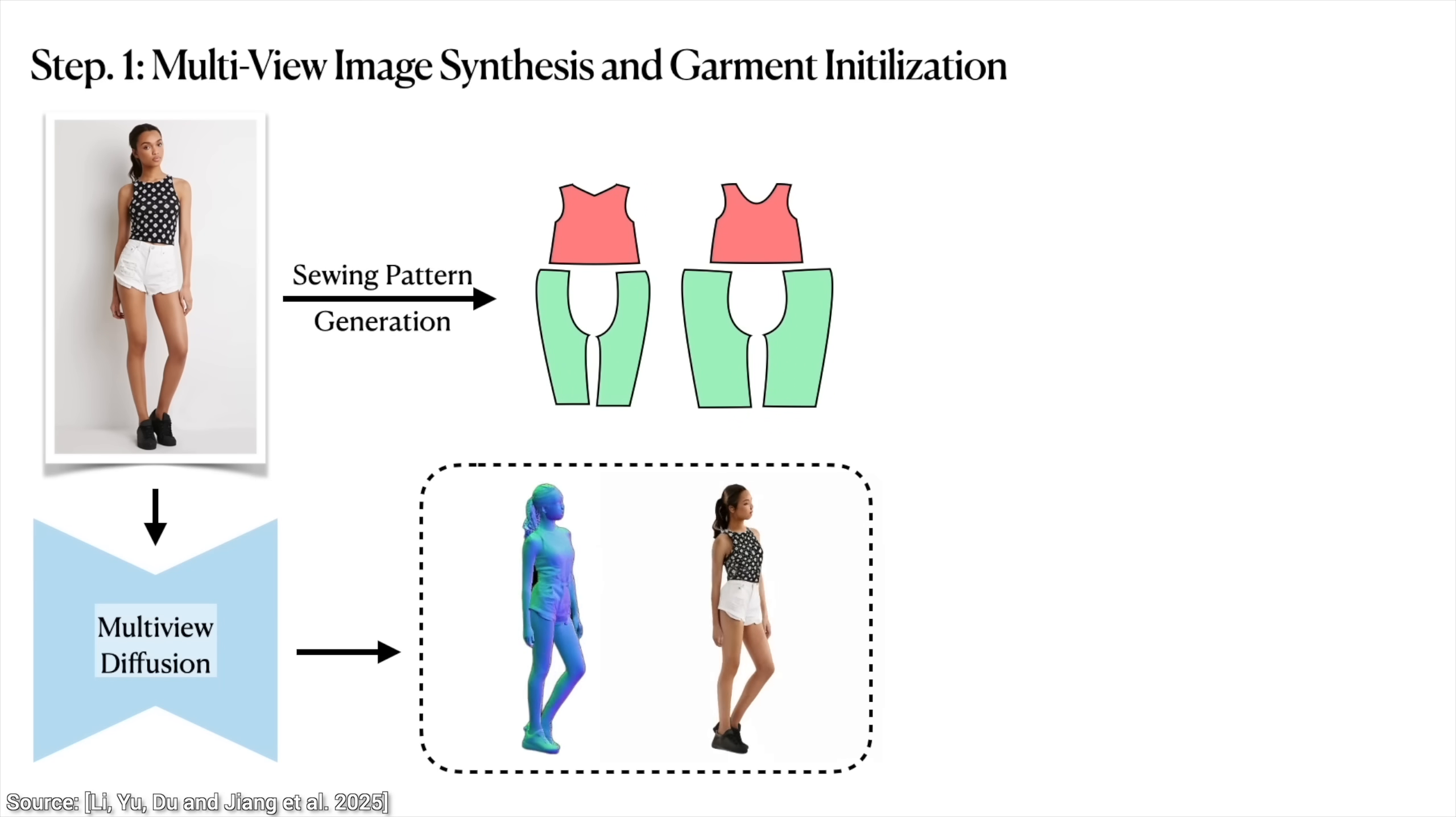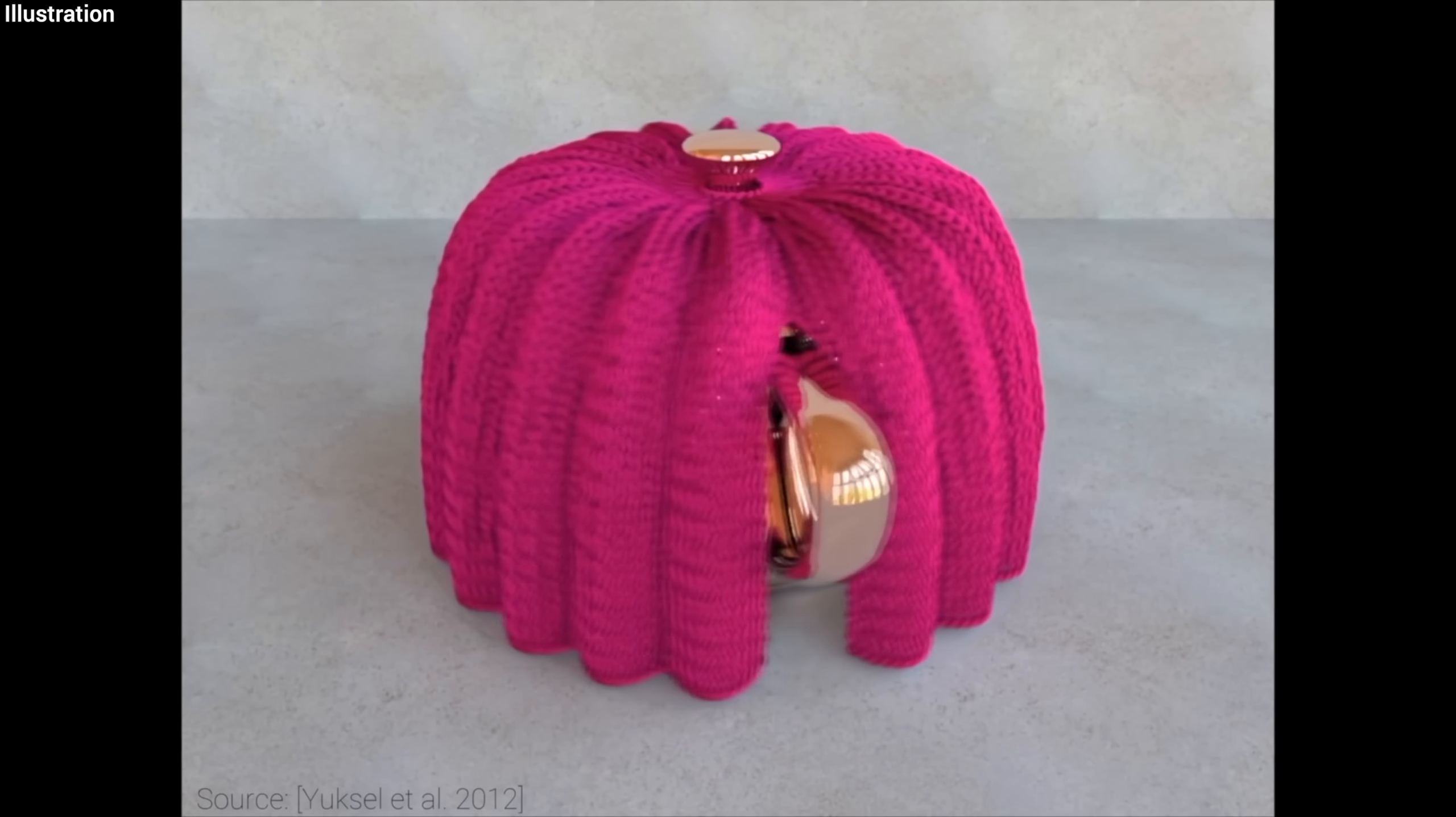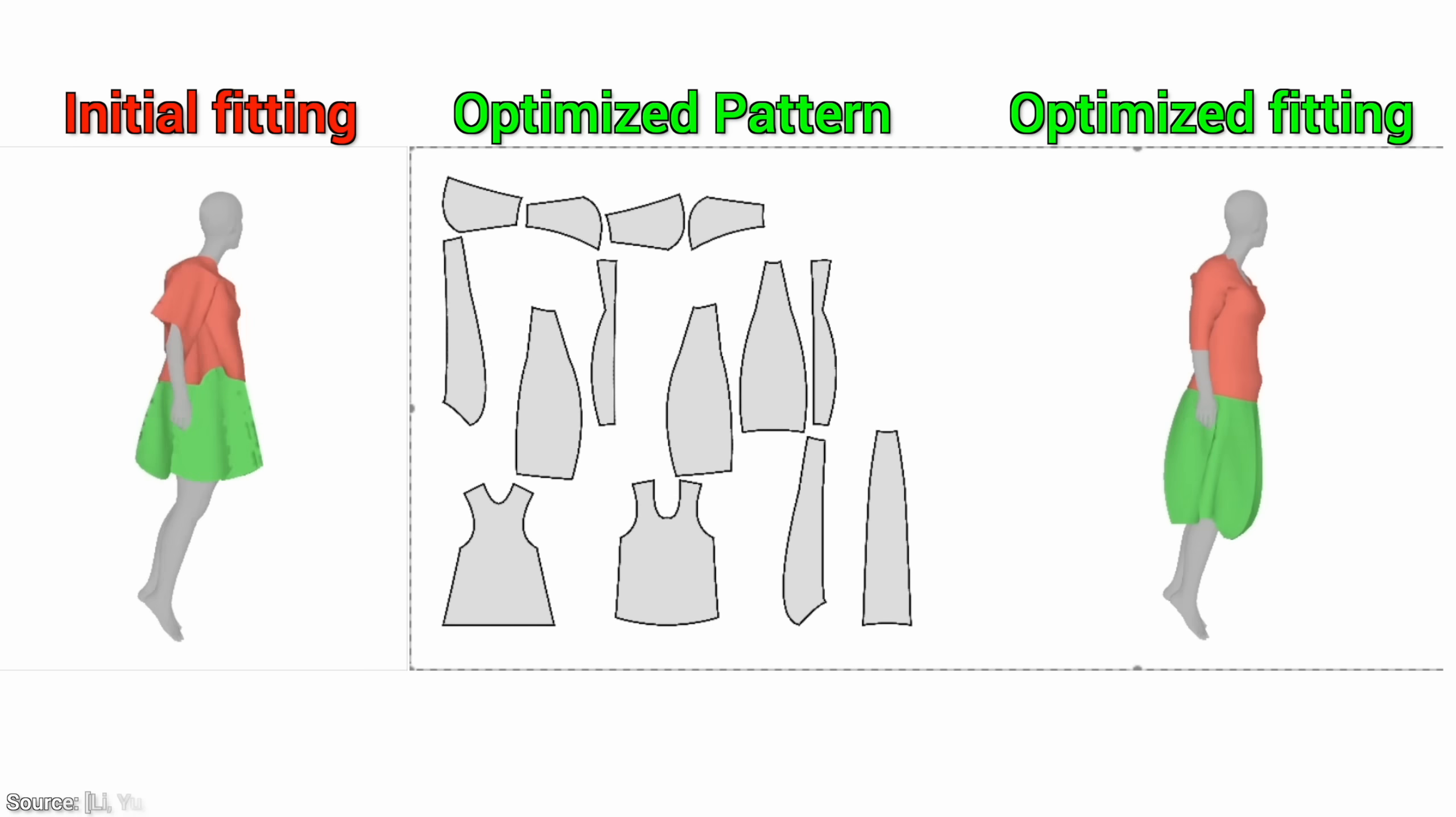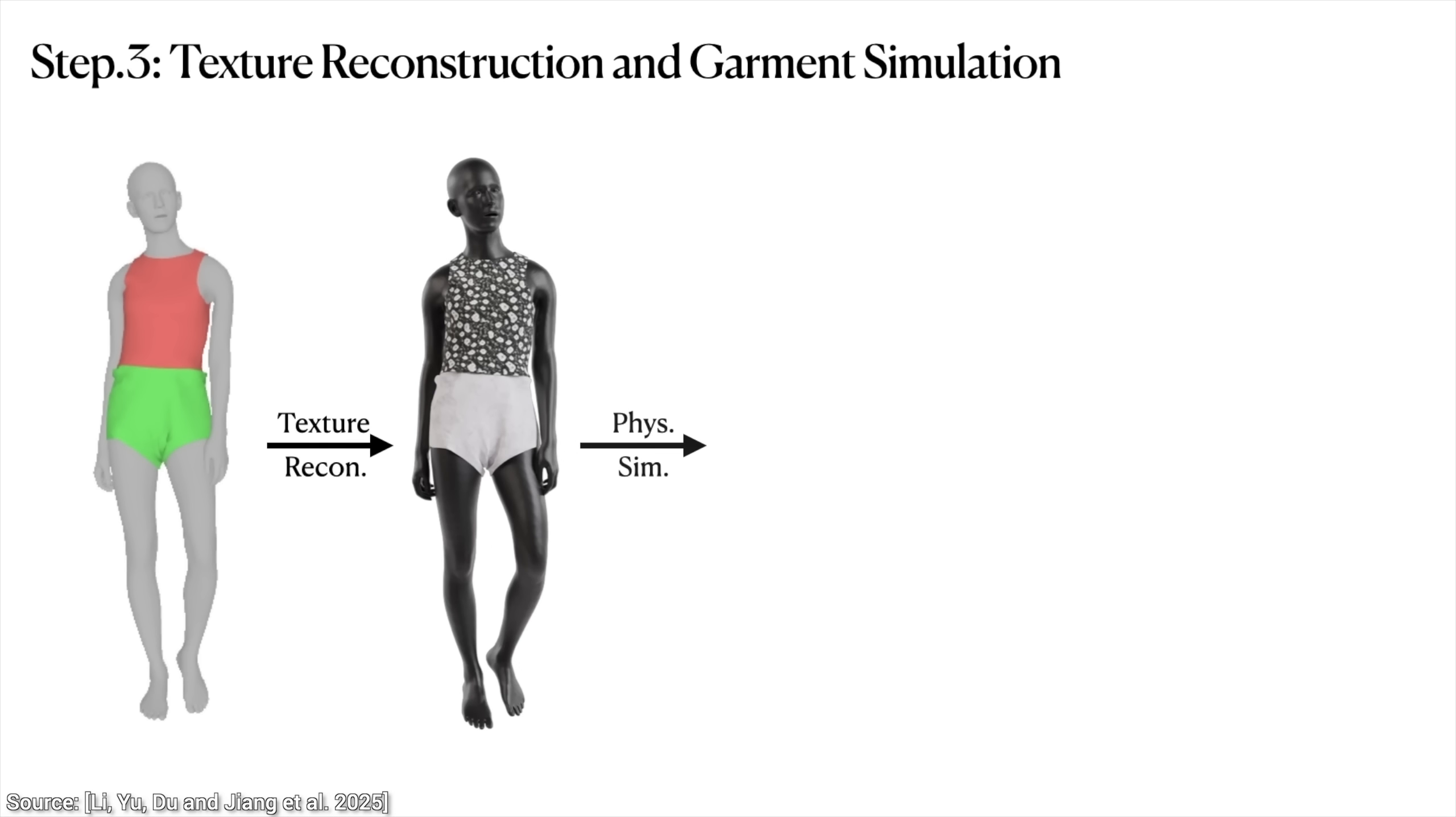we are not done yet. Now, this system uses differentiable physics and multi-view diffusion guidance to refine the shapes of the sewing panels. That means it adjusts the curves and seams so that the simulated garment better matches the character. Okay, let's try that on. Oh my, ha, now we're talking. But the textures are still missing. This is just the shape. Not a problem,